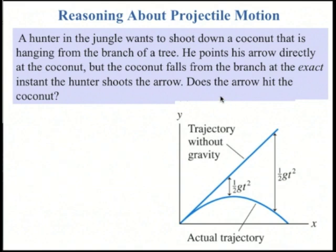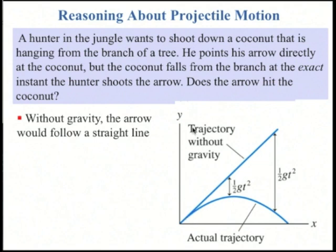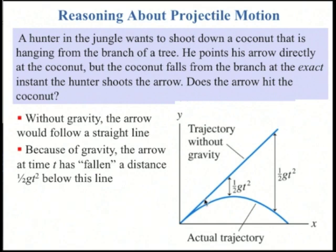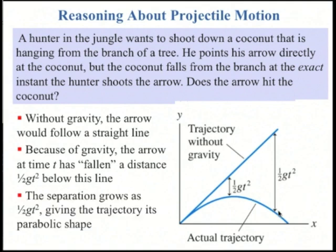Imagine we have a hunter in the jungle who wants to shoot down a coconut that is hanging from the branch of a tree. He points his arrow directly at the coconut, but the coconut falls from the branch at the exact instant the hunter shoots the arrow. Does the arrow hit the coconut, or does it go above, or does it go below? Well, here is a plot of the x- and y-axis, the coconut is right up here, and the hunter is down at the origin. Without gravity, if there were no acceleration due to gravity, the arrow would follow this straight line. Because of gravity, for any time interval t, the arrow has fallen a distance, 1 half gt squared, below this line. So here is the actual trajectory, is this parabola. The separation grows as 1 half gt squared, giving the trajectory its parabolic shape. So that's the arrow.